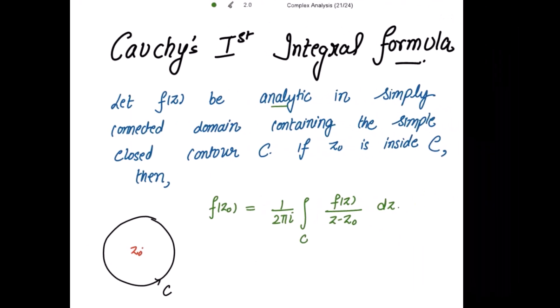We are going to prove Cauchy's first integral formula, which states: let f(z) be analytic in a simply connected domain containing the simple closed contour C. If z0 is inside C, then we have to show that f(z0) is equal to 1 divided by 2πi times the integral of f(z) divided by (z minus z0) over the contour C.